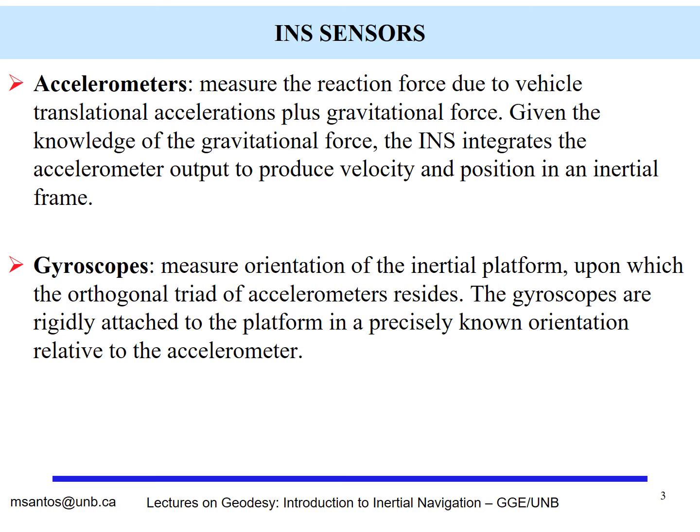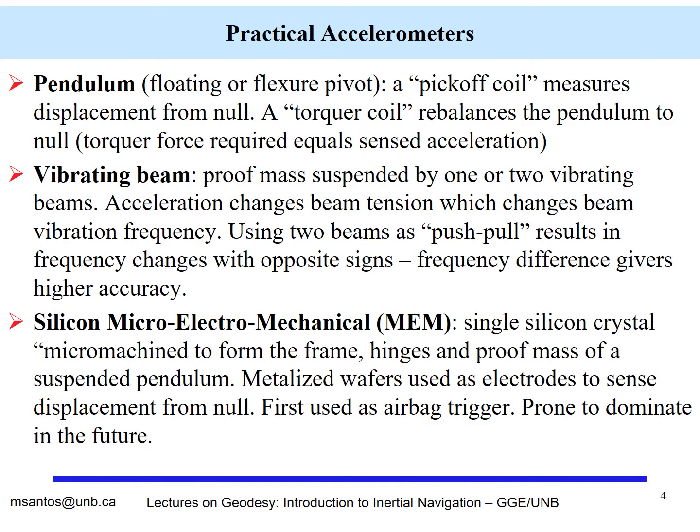The gyroscopes are going to be attached to the platform with a precisely known orientation relative to the accelerometer. This is something we are going to see as a source of errors — proper alignment is necessary.